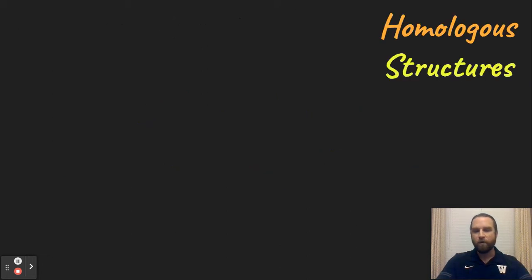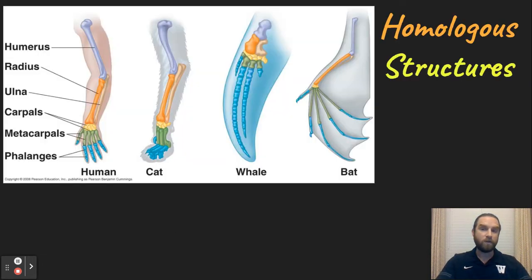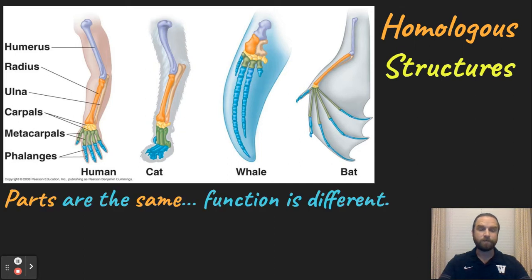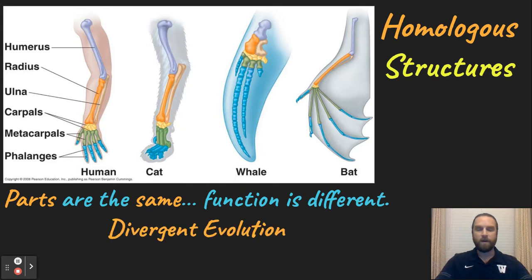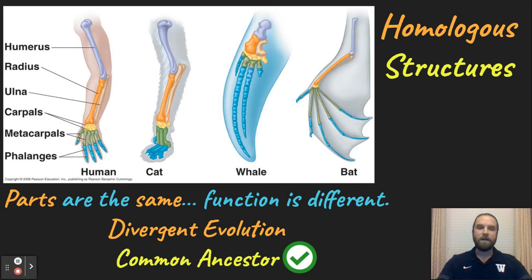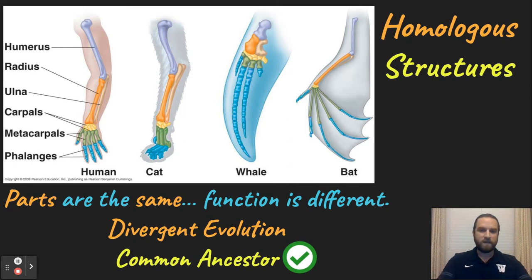Let's look at anatomical homologies more closely. Homologous structures, like the ones we see here, are where the parts are the same but the function is different. Human, cat, whale, and bat forelimbs have very similar structures, but the functions are very different — to grab things, to walk, to swim, or to fly. This is a great example of divergent evolution, where a common ancestor diverged and created different functions for the same parts.